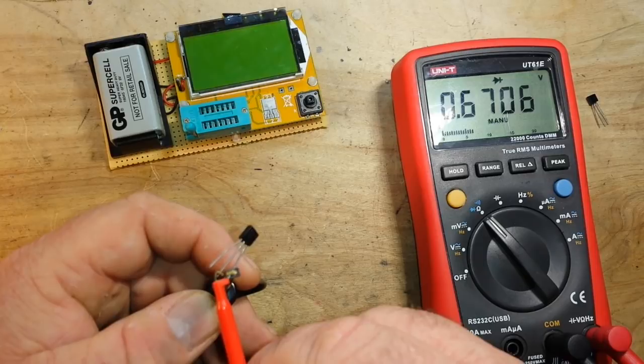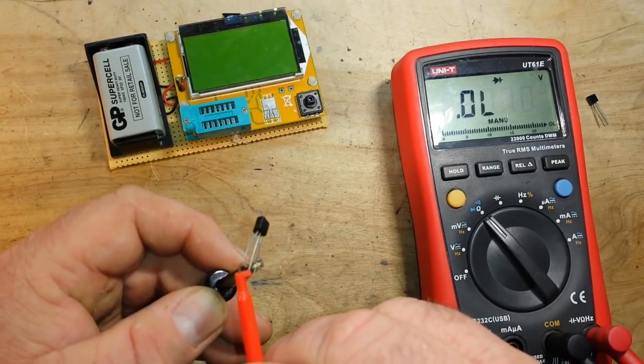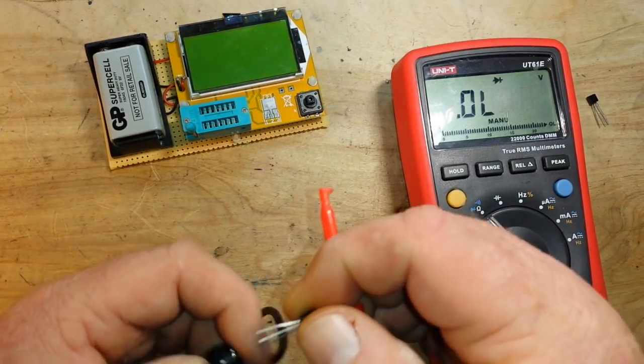Move this over again. Nothing. Oh, there we go. 0.670. Nothing. So, what have we found so far?